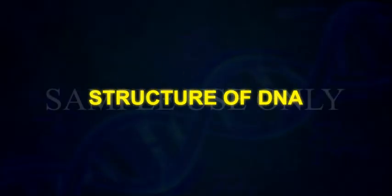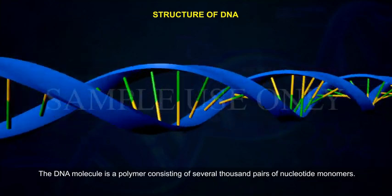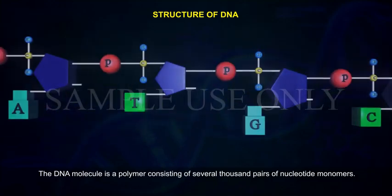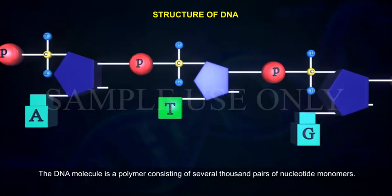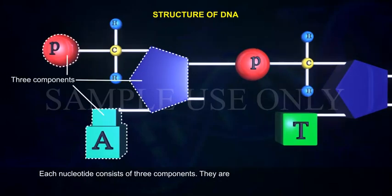Structure of DNA. The DNA molecule is a polymer consisting of several thousand pairs of nucleotide monomers. Each nucleotide consists of three components.